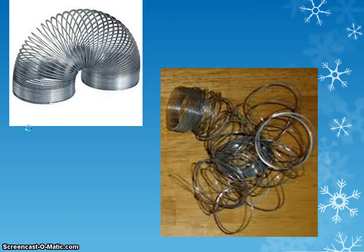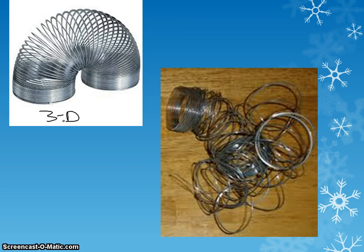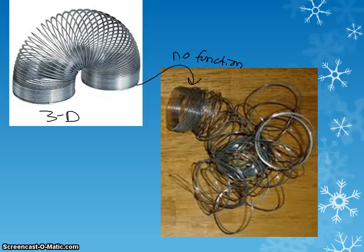Think about a slinky. A slinky has a very unique three-dimensional shape that lets it go back and forth and go downstairs. If you take that shape and mess it up, it's still made of the same exact metal, but you've lost the shape — you've lost the function. Denaturing a protein means changing its 3D shape. It's like taking the key to your house and smashing it with a hammer — it's not going to work anymore. Denatured means it's lost its 3D shape and is now ineffective.